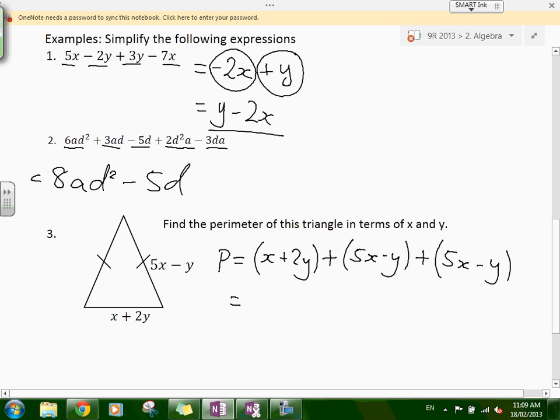Now I have to simplify this. How many lots of x's do I have? Eleven. We've got x, positive 5x, and positive 5x, so we've got 11x. How many lots of y do I have? Zero, because what I have is 2y minus y minus y. It's 11x, and that's our perimeter.